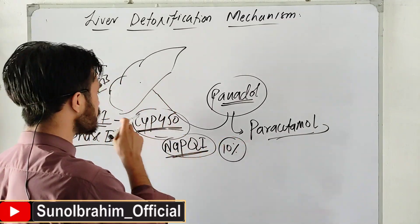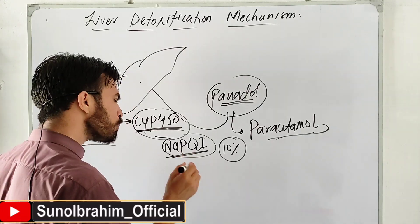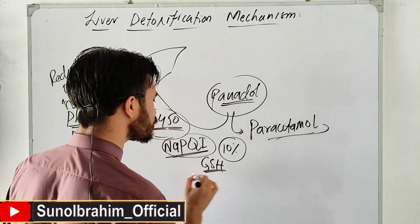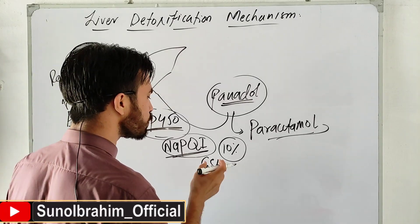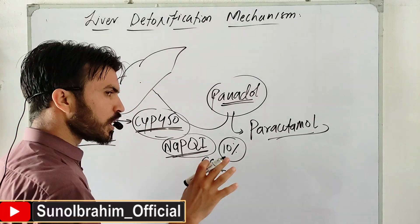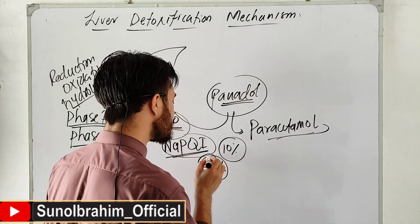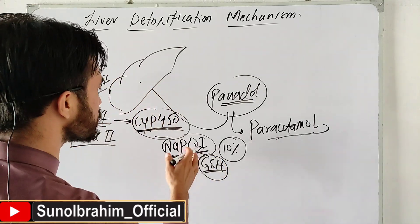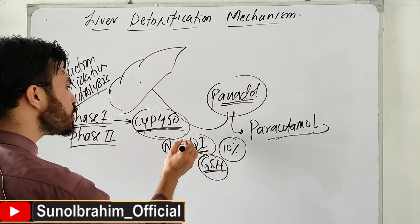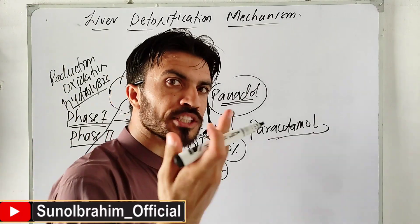About 10% of Paracetamol goes through this NAPQI pathway. Phase Two processes then neutralize it. In the liver, there is GSH - Glutathione - a tripeptide made of three amino acids. Glutathione reacts with NAPQI and converts it into a harmless product, eliminating the dangerous chemical.